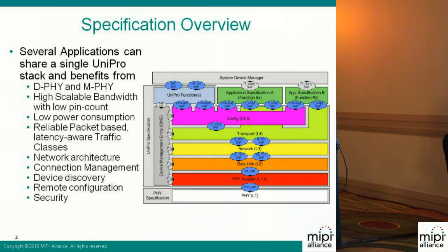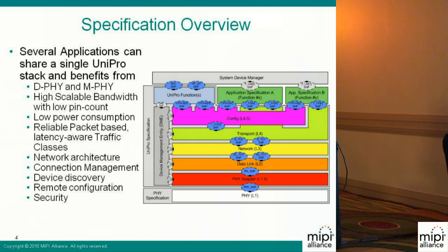The PHY adapter layer takes care of abstracting the physical interface, which is not really interesting for the application, and is able to scale from one data lane up to four data lanes according to the speed and bandwidth required. The data link layer takes care of making reliable traffic between two peer devices because there is retransmission of corrupted frames and so on.